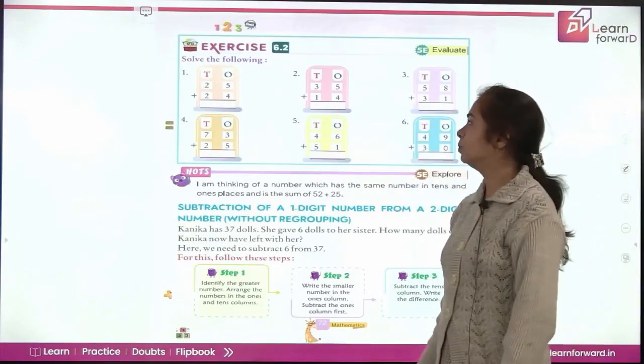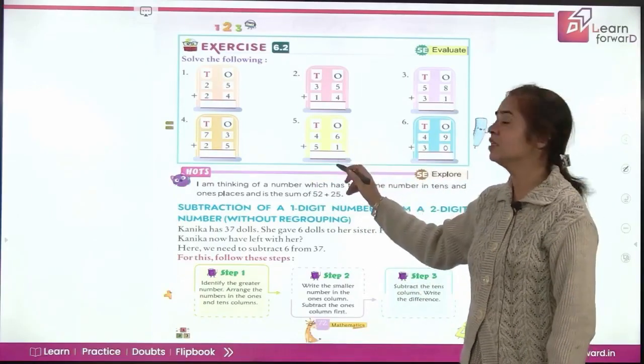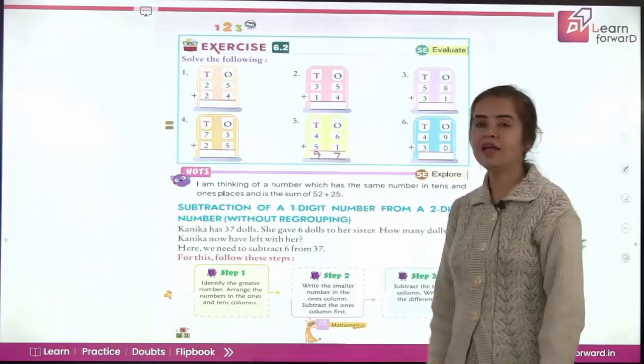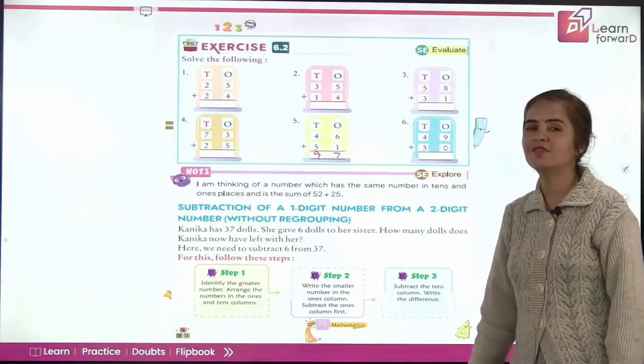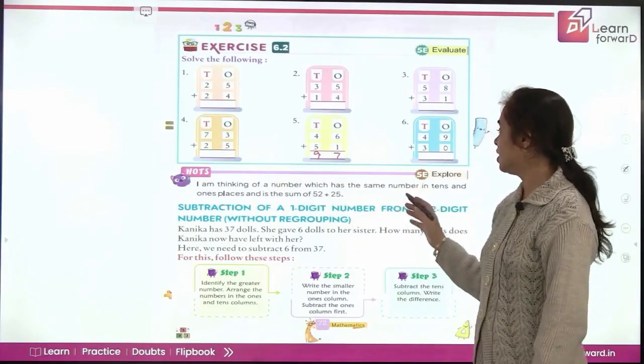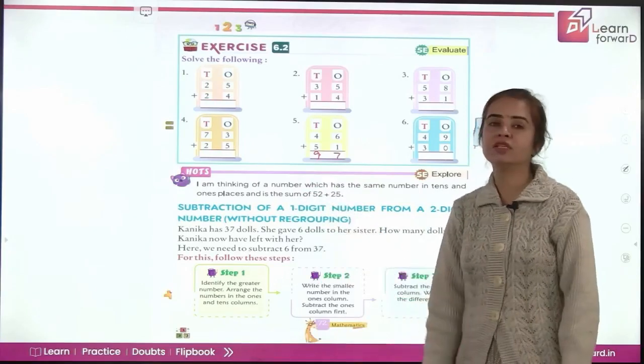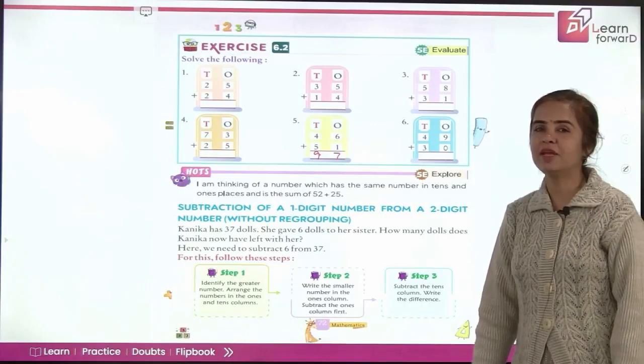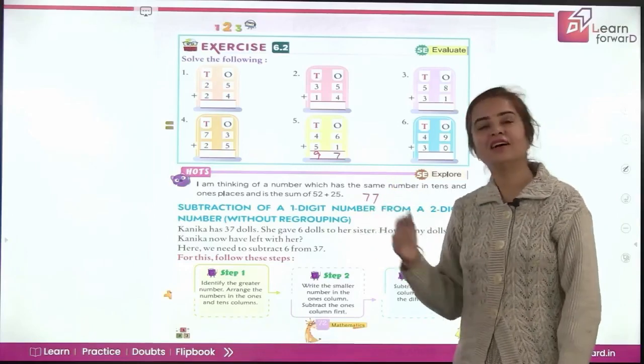And you have an exercise to do. Where numbers are perfectly written for you. So let us add. Six plus one is seven. We will start from the ones place. And four plus five is nine. Now here is the HOTS for you. The questions here you will be doing yourselves to practice and master. What's in HOTS? I am thinking of a number which has the same number in tens and ones places and is the sum of 52 plus 25. So what is the sum of 52 and 25? Quickly do in your notebook and tell me. It is 77. So this is the number.